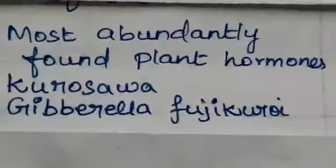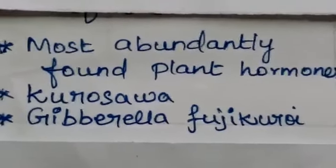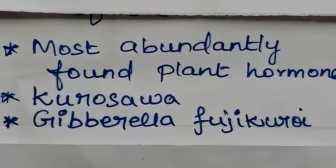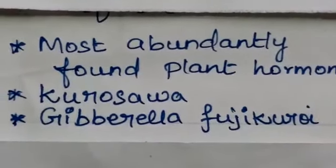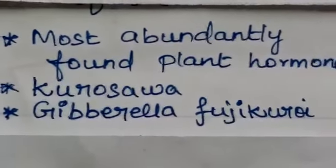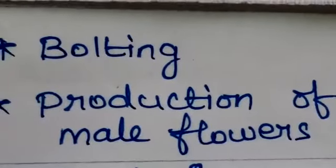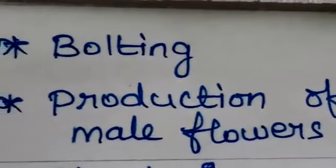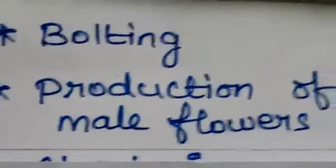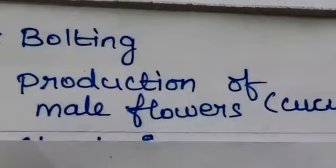Gibberellins are the most abundantly found plant hormones. Kurosawa, a Japanese scientist, identified that foolish seedling disease or bakanae disease in rice crop was caused by the fungus Gibberella fujikuroi. Bolting: treatment of rosette plants with gibberellin induces sudden shoot elongation followed by flowering. It also induces the production of male flowers in cucurbits.